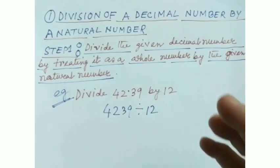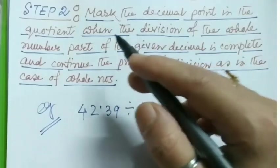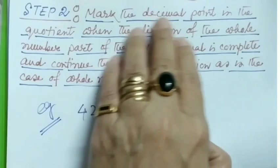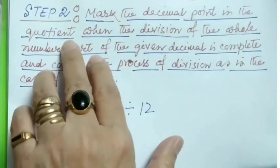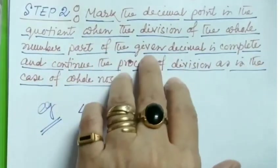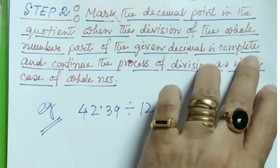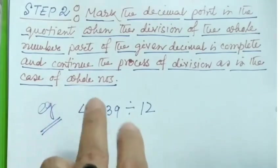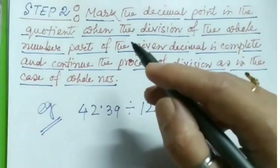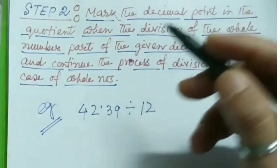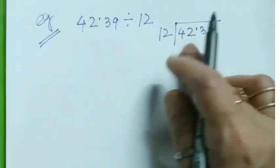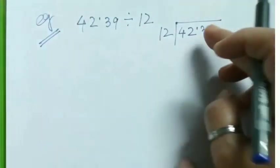Step number two: Mark the decimal point in the quotient when the division of the whole number part of the given decimal is complete, and continue the process of division as in the case of whole numbers.